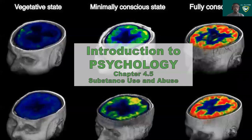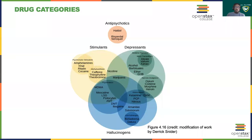Welcome to chapter four of Intro to Psychology. In this video, I'll be discussing substance use and substance abuse. Generally speaking, there are four main categories of drugs or psychoactive substances: stimulants, depressants, hallucinogens, and antipsychotics.